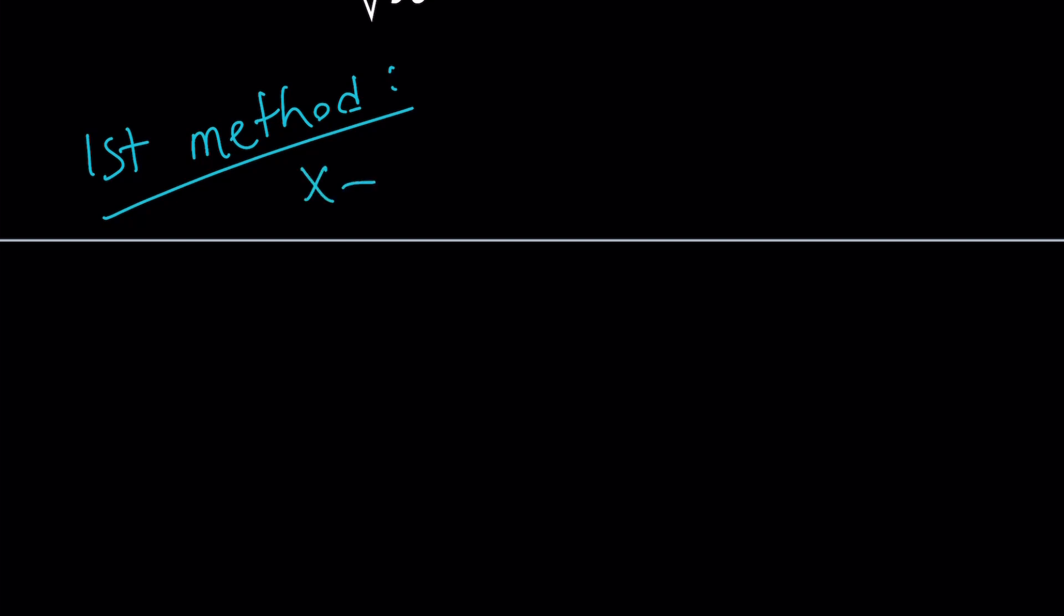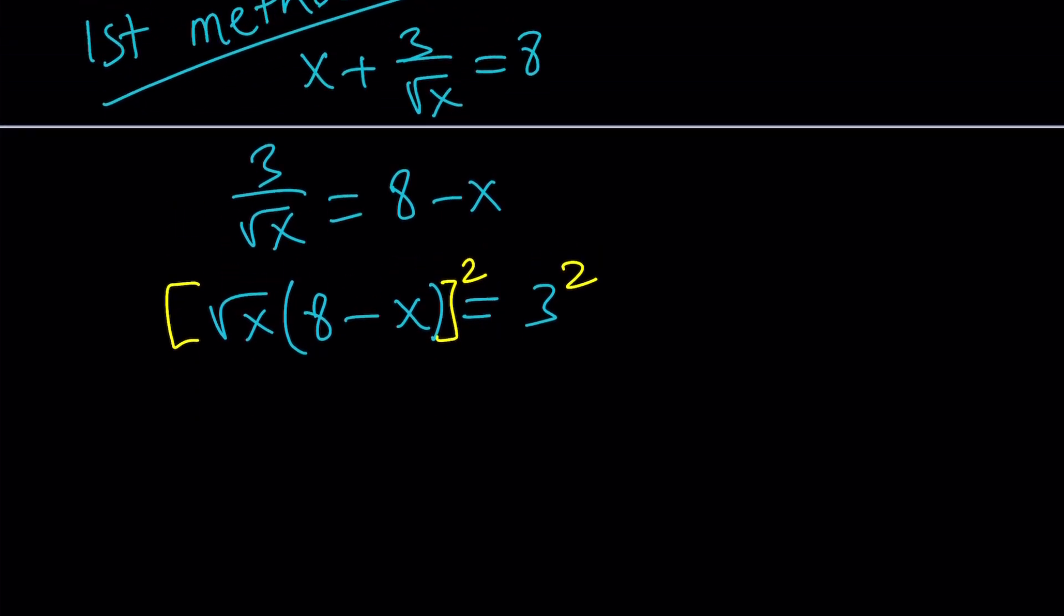For my first method, I'm going to go for the solution. Let's take a look at this equation: x plus 3 over the square root of x equals 8. Let's isolate the radical. We could subtract x, and then this is going to be 8 minus x. And then switch these around, or you could probably just cross multiply. And then square both sides.